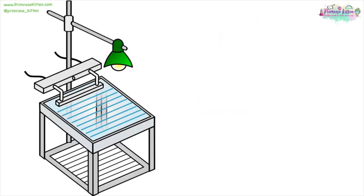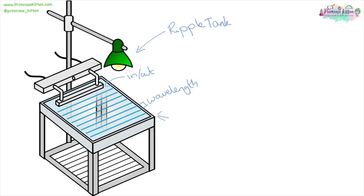If we want to measure the speed of a wave, we can use a ripple tank. This will go in and out of the water creating waves. From this we can measure wavelength, and also by looking at how many waves pass a certain point in a second, we get the frequency. Then we can use our equation to work out the speed of the wave: v equals f times lambda.